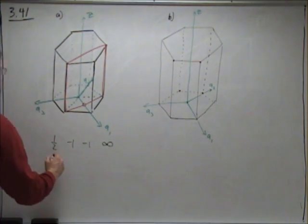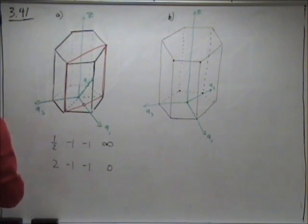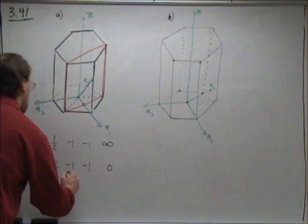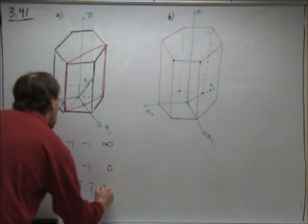Then we take the inverse of these: 2, negative 1, negative 1, 0. And we put them in proper notation: 2, 1 bar, 1 bar, 0.